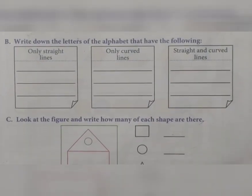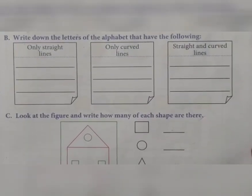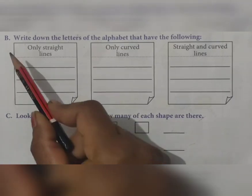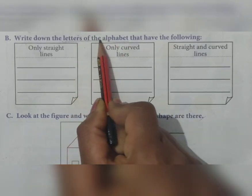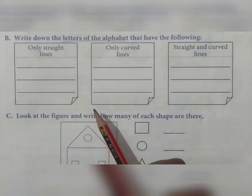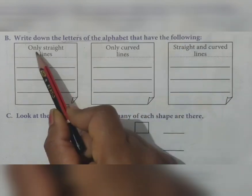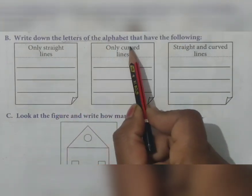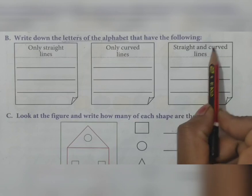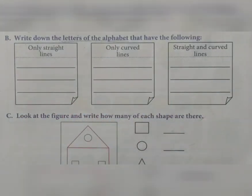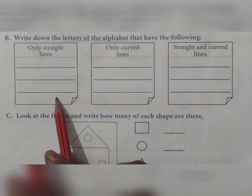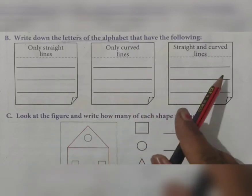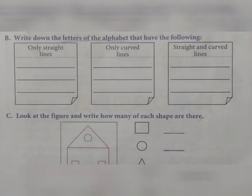Now see question number B. Write down the letters of the alphabet that have the following: only straight lines, only curved lines, or straight and curved lines combined. That means you have to observe all letters from A to Z and classify them into which column they belong.